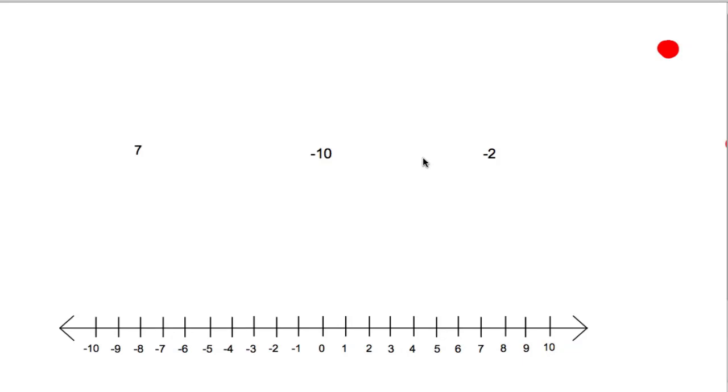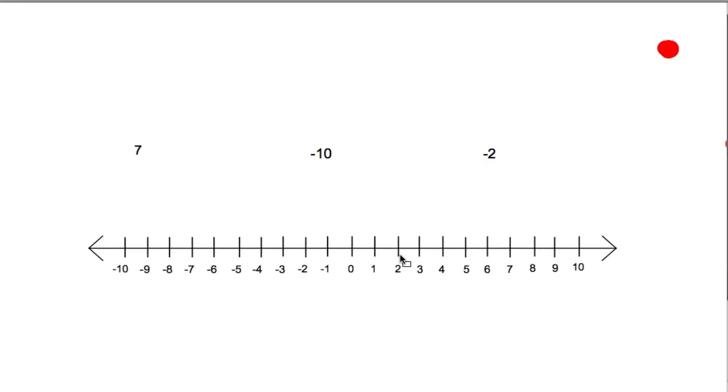When we place numbers on a number line, the format we typically take is to place a dot on the number we want to represent, and then write the number above that dot.